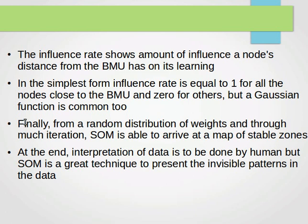Now, a few things to notice. The influence rate shows the amount of influence a node's distance from the BMU has on its learning. In the simplest form, influence rate is equal to 1 for all the nodes close to the BMU and 0 for others, but a Gaussian function is also common. Finally, from a random distribution of weights and through much iteration, self-organizing map is able to arrive at a map of stable zones. At the end, interpretation of data is to be done by a human, but SOM is a great technique to present the invisible patterns in the data.